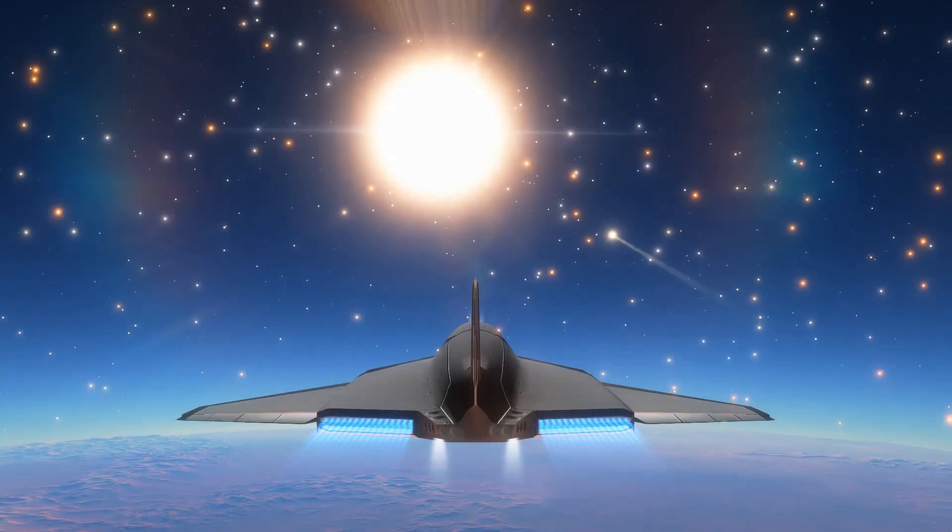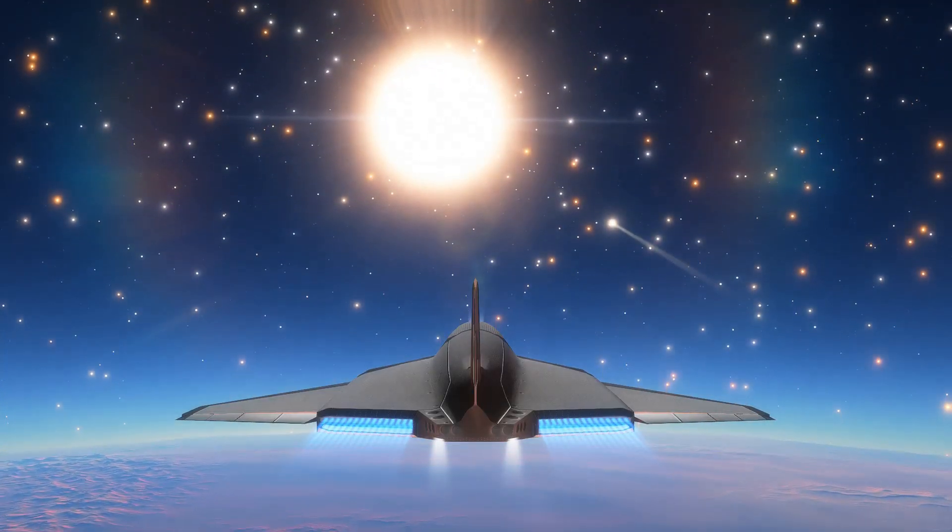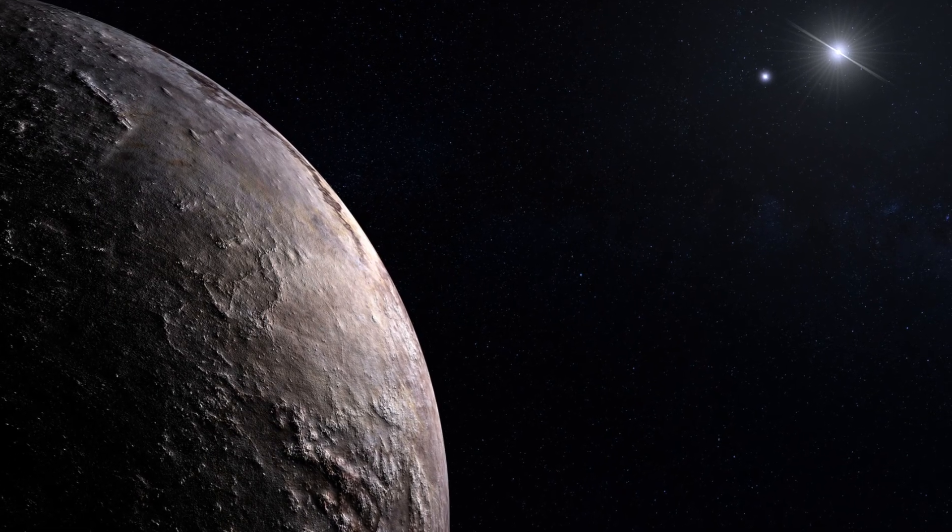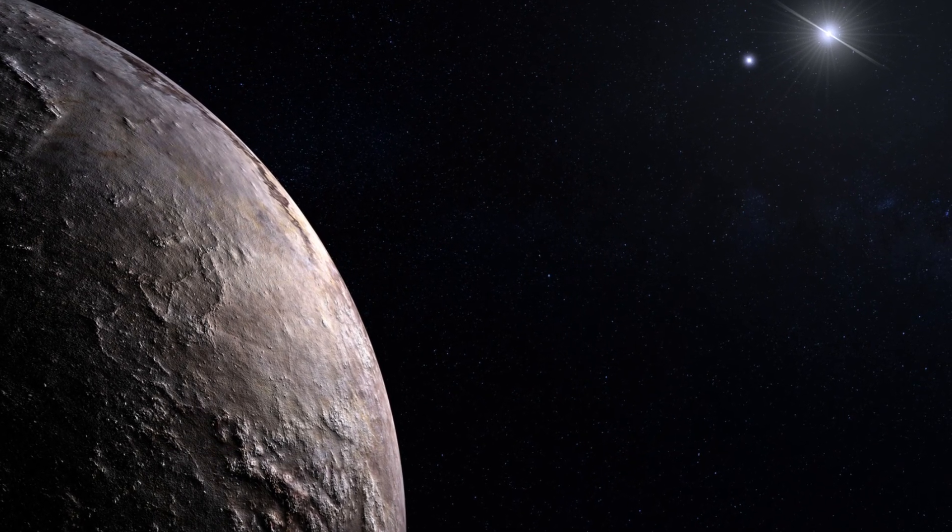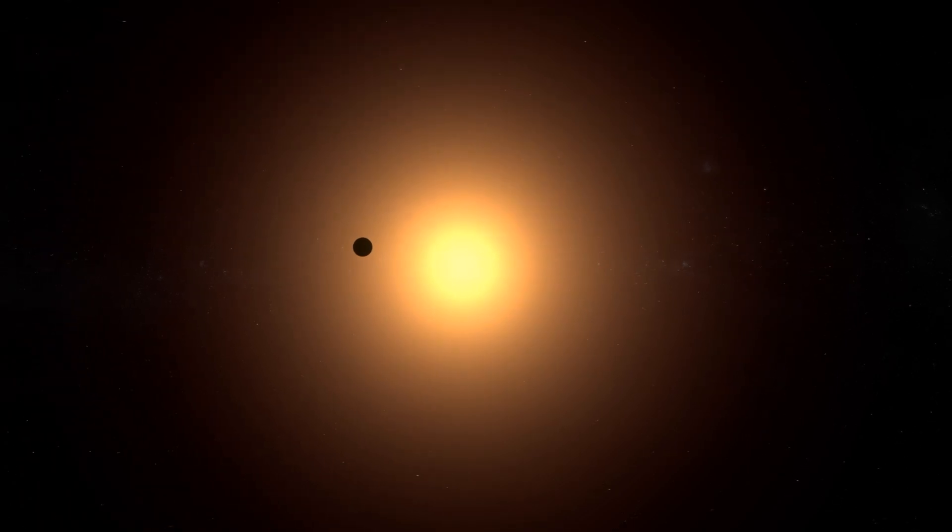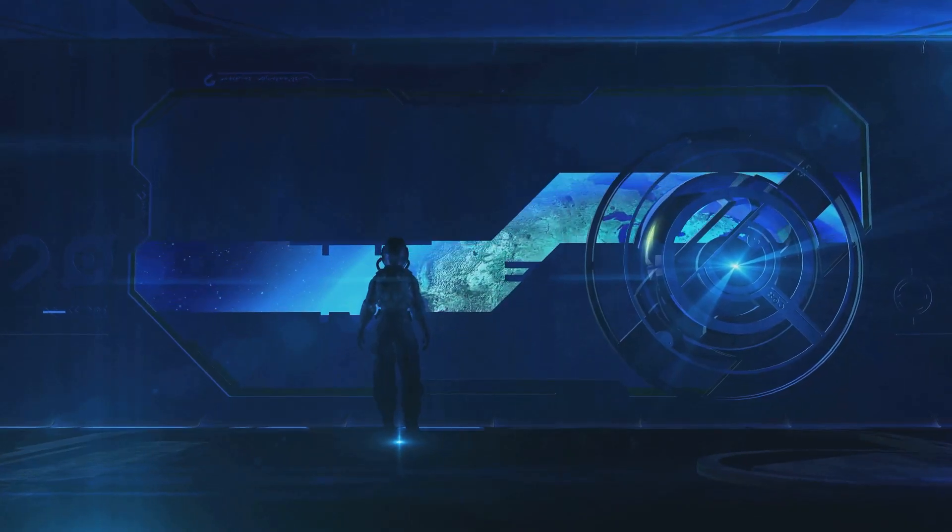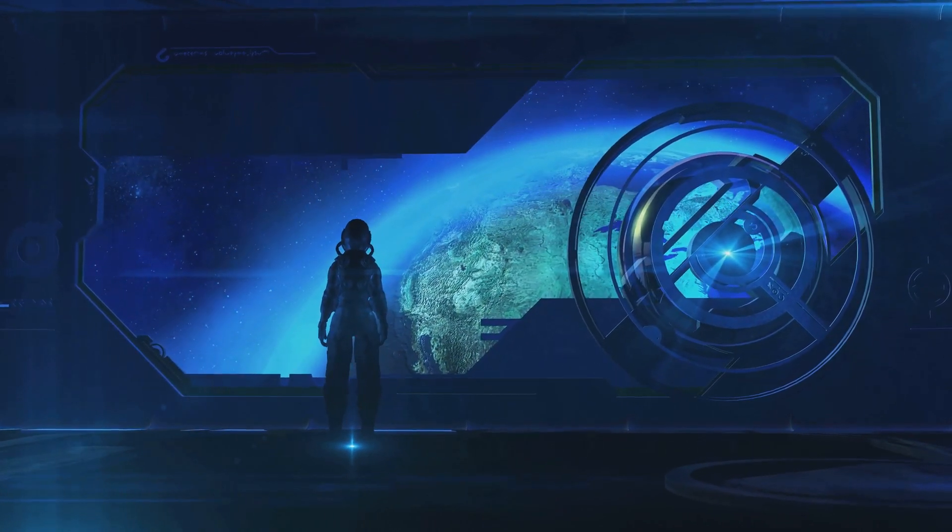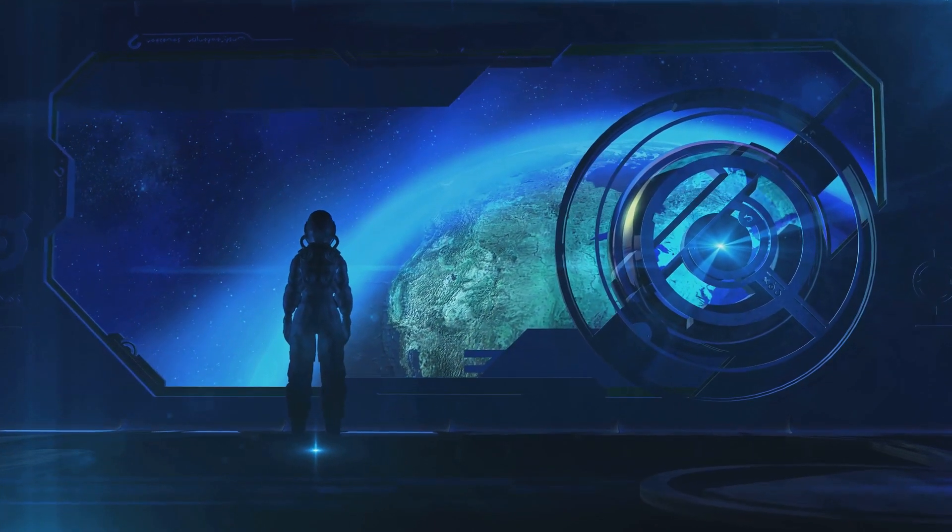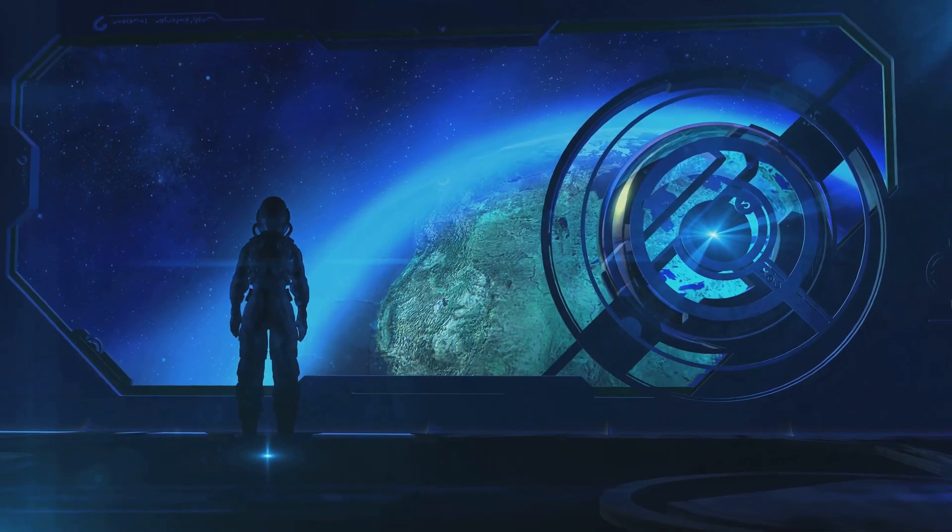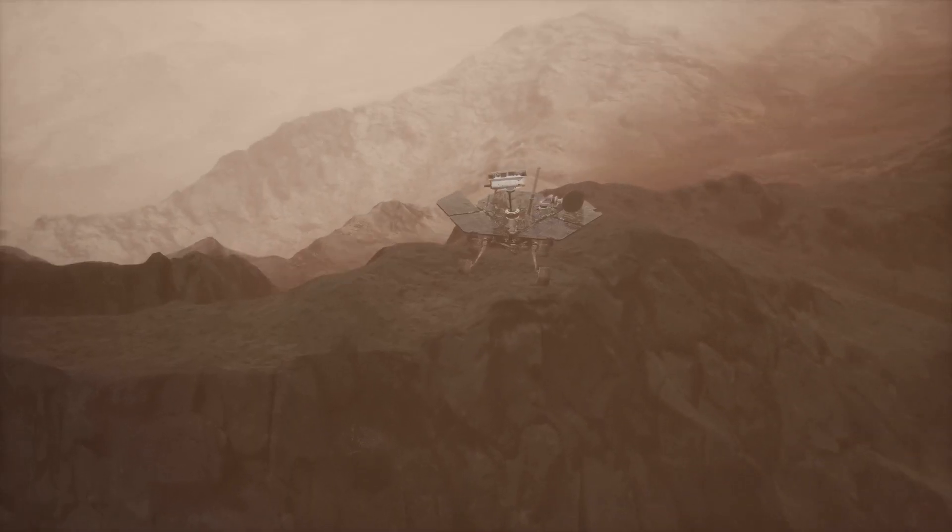Reaching for the stars, missions to HD 40307 G. While HD 40307 G is relatively close to Earth in astronomical terms, it is still far beyond our current technological reach. However, future missions could potentially study HD 40307 G in more detail, searching for signs of life and providing valuable insights into the nature of this intriguing exoplanet.